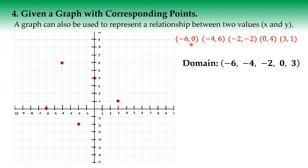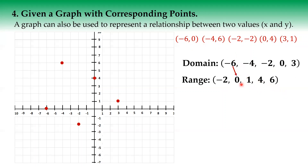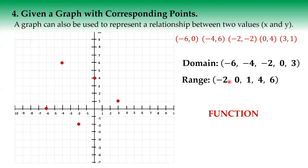So the domain is: negative six, negative four, negative two, zero, and three. For range, we have: negative two, zero, one, four, and six. Negative six maps to zero, negative four maps to six, negative two maps to negative two, zero maps to positive four, three maps to positive one. So this is a function — each y value has a different x value.